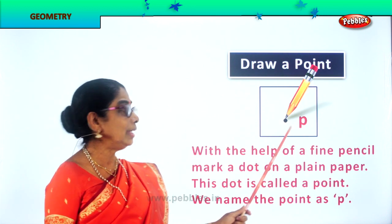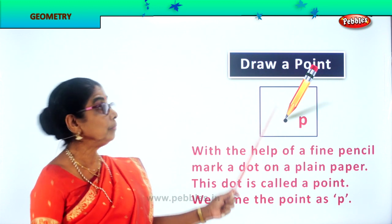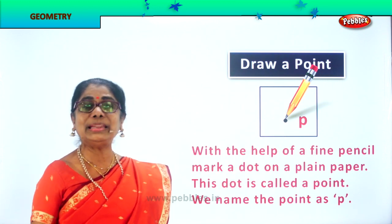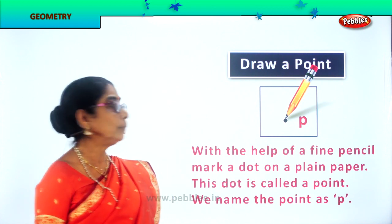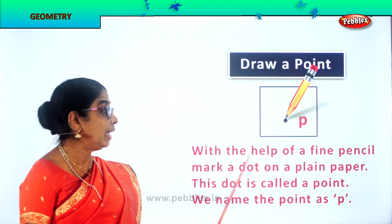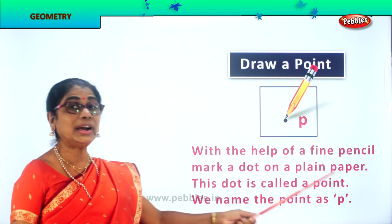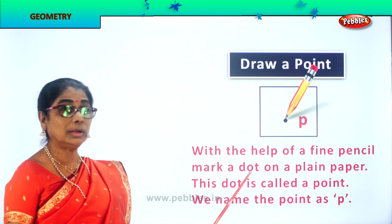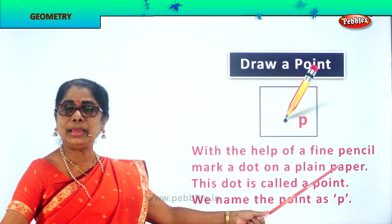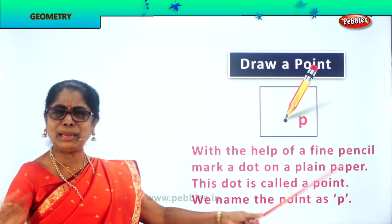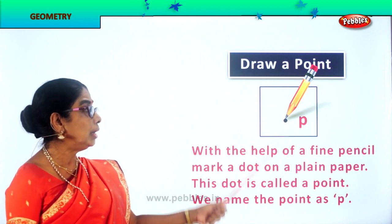Look at the pencil. The pencil point should be sharp, where you can make a dot. Now, draw a point — what that means is, mark a point. Just touch with your pencil and it makes a point. That's a point. What is a point? With the help of a fine pencil, mark a dot on a plain paper — not ruled paper, simply plain. Take an empty plain paper and mark a dot on it. This dot is called a point.